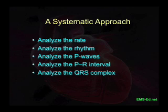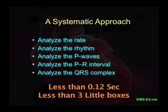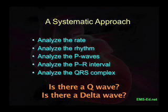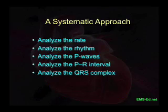Analyze the QRS complex. Is it wide or is it narrow? Does it contain a physiological or pathological Q wave? Does it contain a delta wave? Sometimes these things are more germane in the setting of a 12-lead acquisition than in a 3.